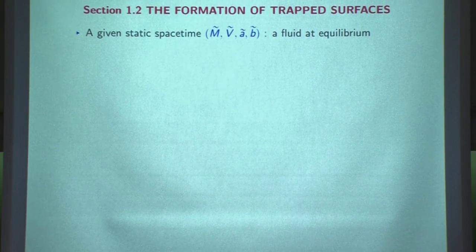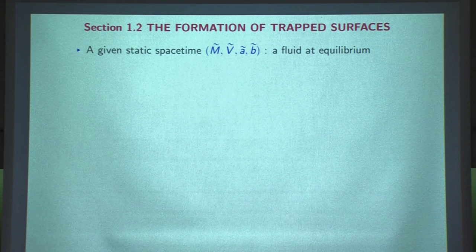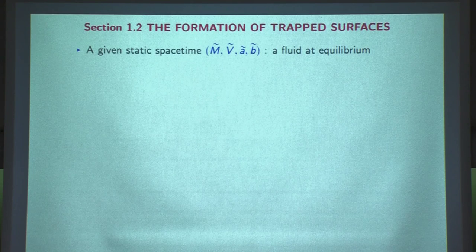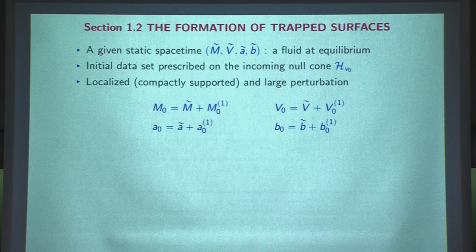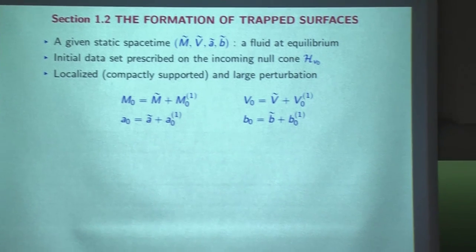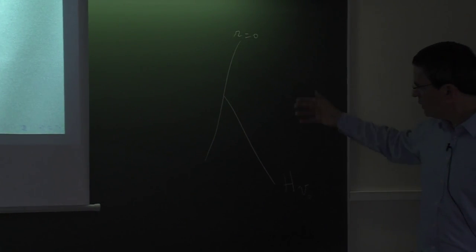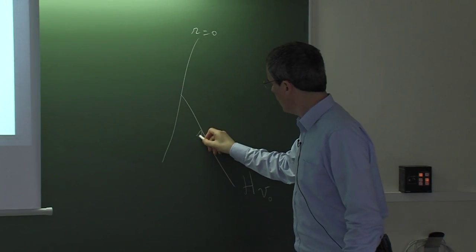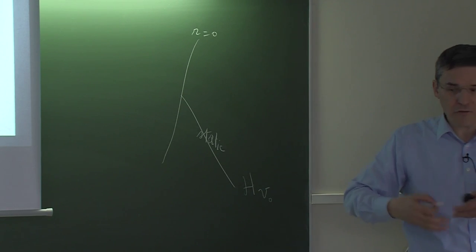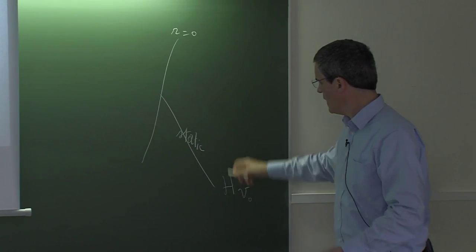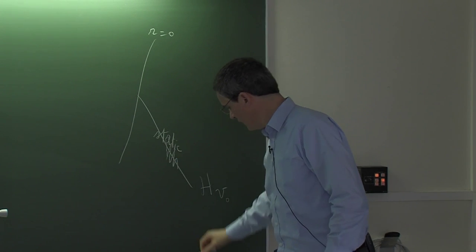We take such a static solution — it describes the fluid in equilibrium. On top of that, we will put the short pulse. So we are given M tilde, V tilde, A tilde, B tilde described by the previous system. On top of that, I will add a perturbation on an incoming null cone, denoted H_V0. We have the axis of symmetry and an incoming cone, and we put data on that. So we start with something which is initially static, and on top of this initial data I add a very concentrated pulse with very large strength.